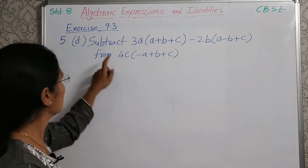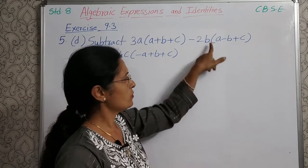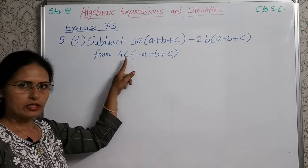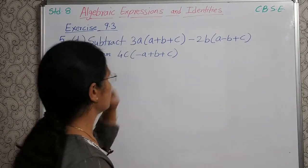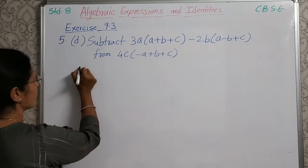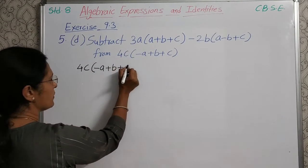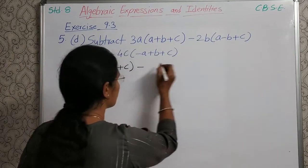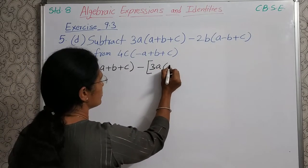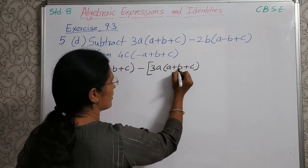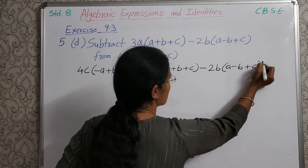Next question: subtract 3A into bracket A plus B plus C, minus 2B into bracket A minus B plus C, from 4C into bracket minus A plus B plus C. So from this expression, first we will write 4C into bracket minus A plus B plus C. From this, subtract the whole expression: 3A into bracket A plus B plus C, minus 2B into bracket A minus B plus C. We will write that in the square bracket.